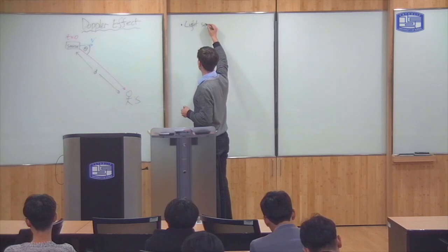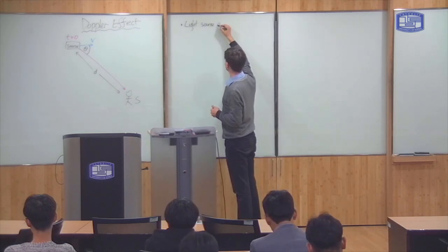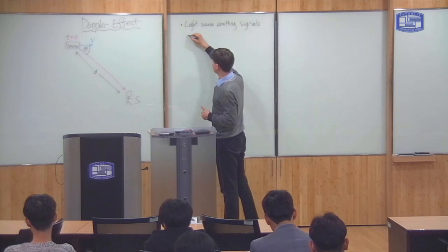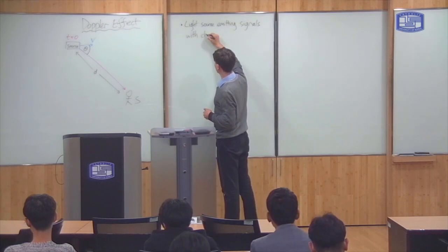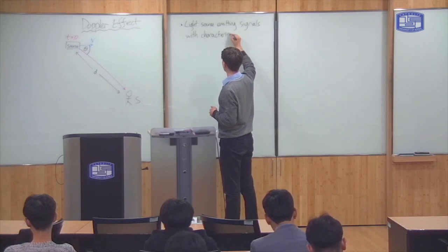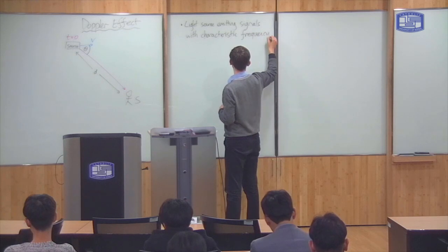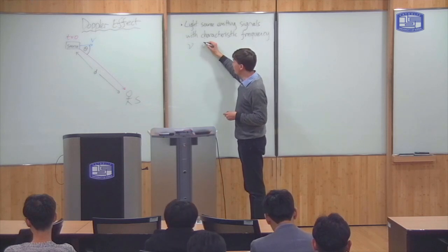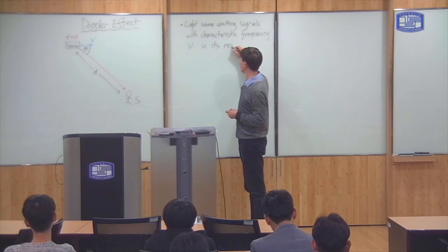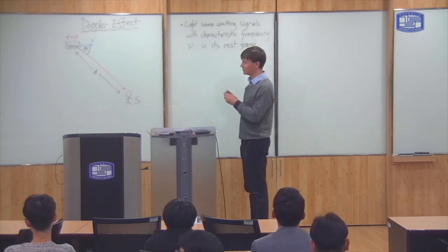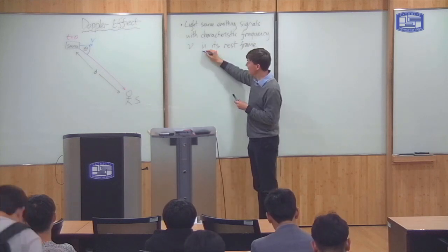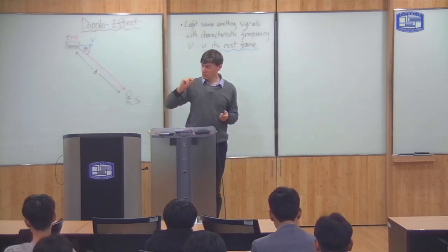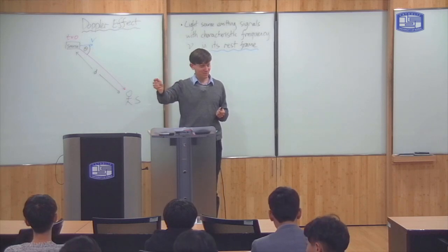You've got a light source which emits signals. Nu is the characteristic frequency of the light source in its rest frame — so in the frame in which it's stationary, it has a frequency nu. In the frame in which it's moving, this nu will become slower because of the time dilation effect.